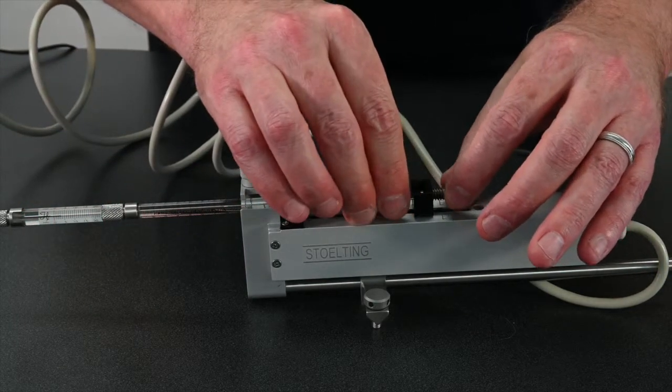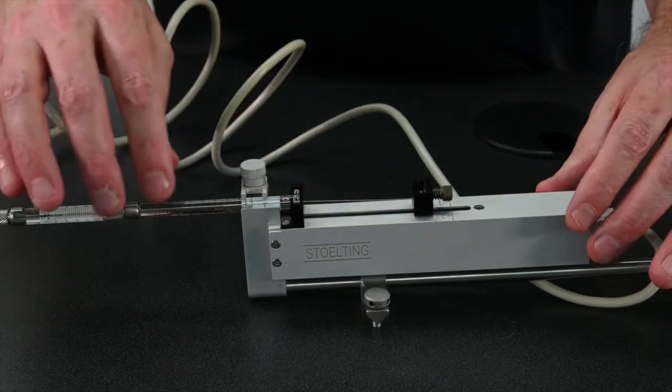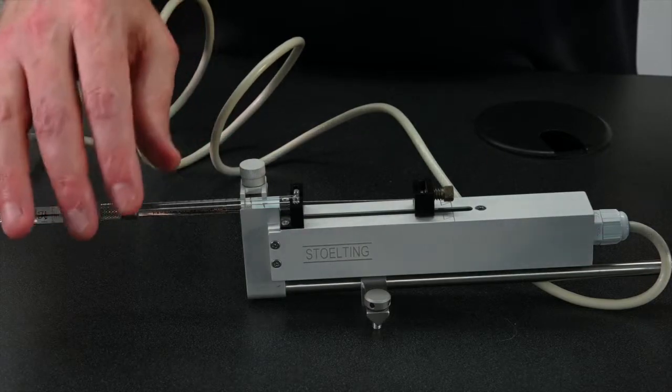And then simply at the top, put pressure lightly onto the top of the plunger end of the syringe. And that's it. Very simple to load the syringe.